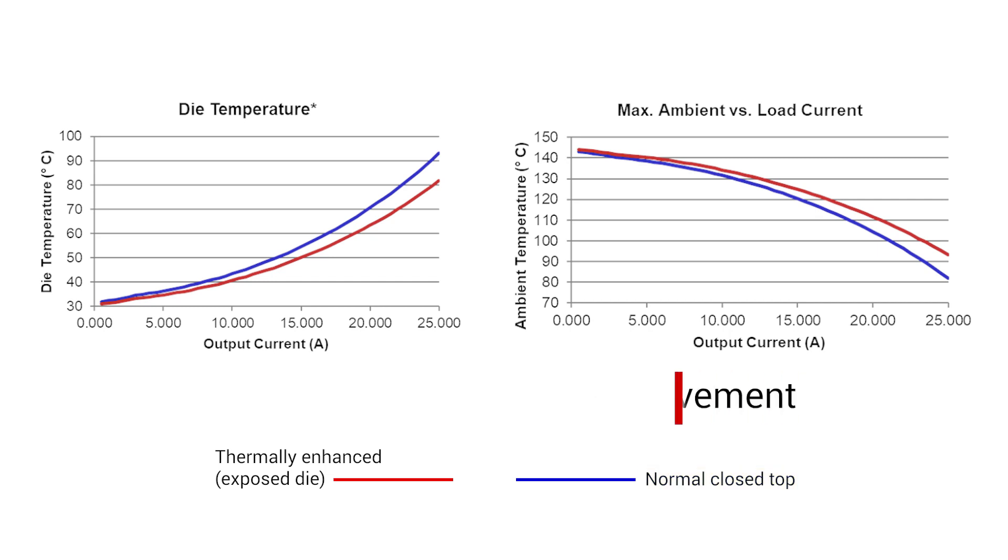There is an even greater improvement in the junction-to-case thermal resistance at approximately 10.4 degrees Celsius per watt lower than the standard package.